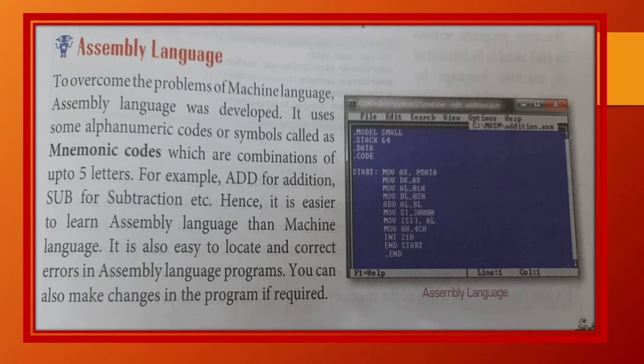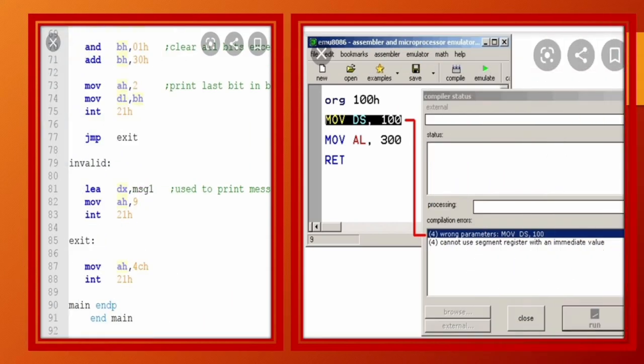Assembly language. To overcome the problem of machine language, assembly language was developed. It uses some alphanumeric codes or symbols, called as mnemonic codes, which are combinations of up to five letters. For example, add for addition, sub for subtraction, etc. Hence, it is easier to learn assembly language than machine language. It is also easy to locate and correct errors in assembly language program. You can make changes in the program if required. Means, assembly language me binary numbers ki jagah alphanumeric codes use hote hain, which is called mnemonic codes.